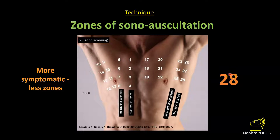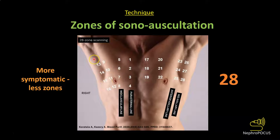The 28-zone ultrasound has been traditionally described in nephrology literature for dialysis patients. It involves auscultating each rib intercostal space using a phased array probe along the parasternal line, mid-clavicular line, anterior axillary line, and mid-axillary line on each side. On the right side you auscultate from the second to the fifth intercostal space, and on the left side from the second to the fourth intercostal space — one fewer zone on the left because of heart interference.